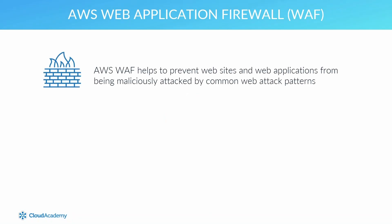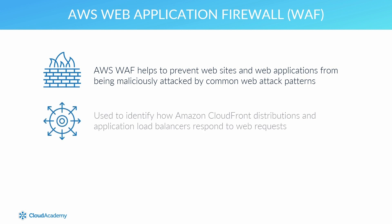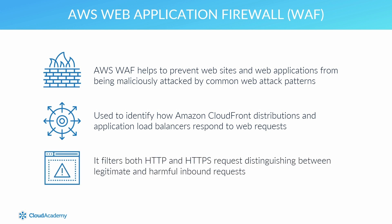The AWS Web Application Firewall is a service that helps to prevent websites and web applications from being maliciously attacked by common web attack patterns such as SQL injection and cross-site scripting. It is also used to identify how Amazon CloudFront distributions and application load balancers respond to web requests based upon specific conditions. The services work together to filter both HTTP and HTTPS by distinguishing between legitimate and harmful inbound requests that will then either be allowed or blocked with a HTTP 403 error code, which is a forbidden error.